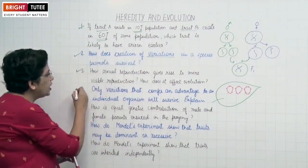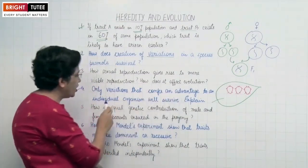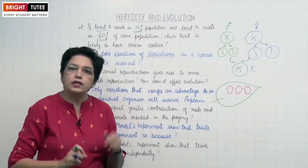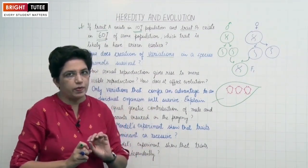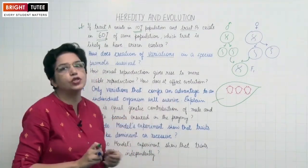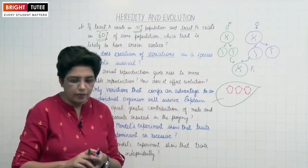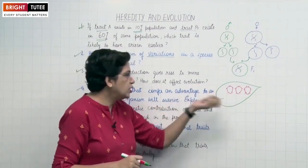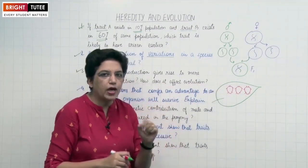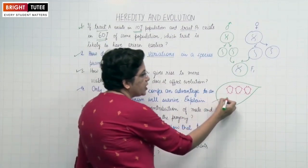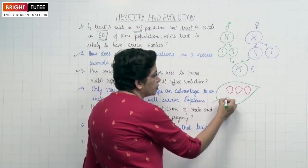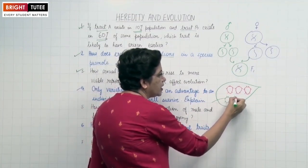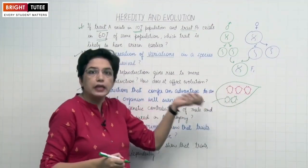Next question: Only variations that confer an advantage to individual organisms will survive. As mentioned, variations can be favorable or unfavorable — only those which are advantageous to the organism will be able to survive. For example, imagine there was a population of red beetles. Due to variation, a few beetles changed into green color — there was a variation and the next generation of some organisms was green in color.